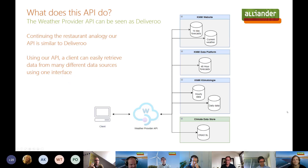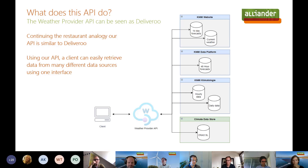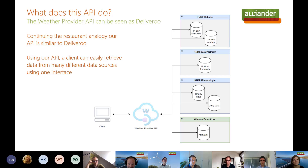What we've built is also an API, but ours is slightly different — it doesn't quite fit that analogy. Our API retrieves data from many different data sources: weather sources from KNMI and the Climate Data Store. So our API is not necessarily a waiter, but maybe a delivery person from Deliveroo or Uber Eats — someone who can order from many different restaurants. Hopefully that gives you an idea of what an API is and also what our API does.